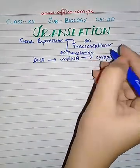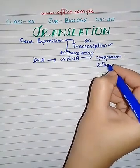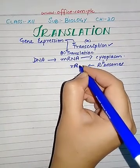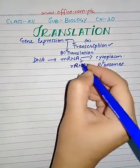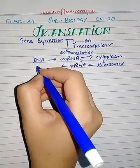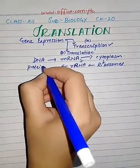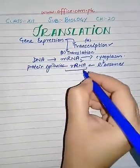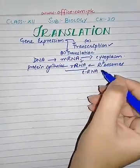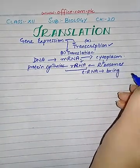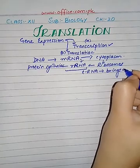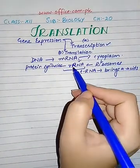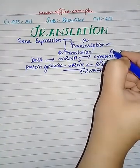As soon as it enters the cytoplasm, the messenger RNA meets ribosomes. Ribosomes have ribosomal RNA, so messenger RNA combines with ribosomal RNA and together they begin protein synthesis. Transfer RNA also helps in this process because transfer RNA brings the required amino acids. The amino acids are brought by transfer RNA and they join at the ribosomes, which are the protein-synthesizing factories.